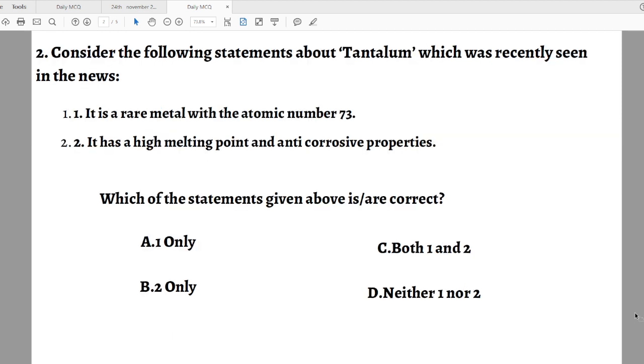Question number two: Consider the following statements about tantalum metal which was recently seen in the news. Statement one: It is a rare metal with atomic number 73. Statement two: It has high melting point and anti-corrosive properties. Which of the statements given above are correct? Options are: A - 1 only, B - 2 only, C - both, D - neither.